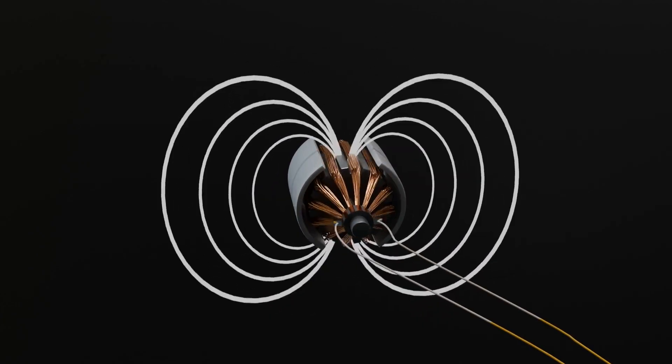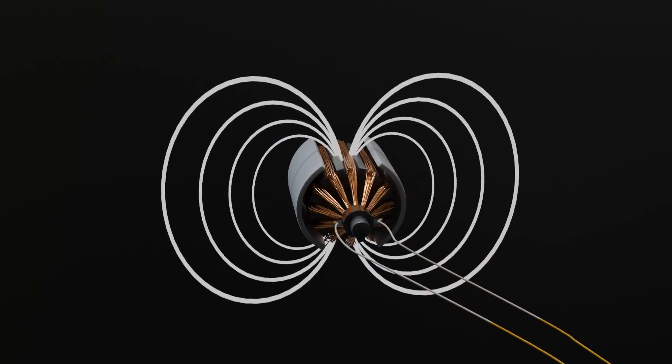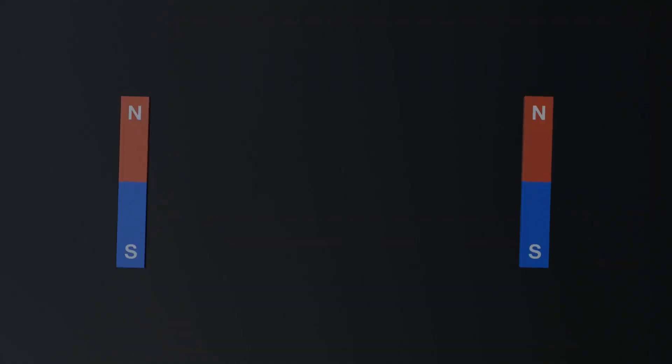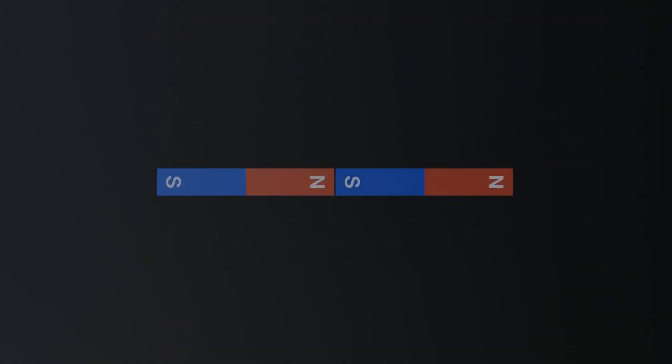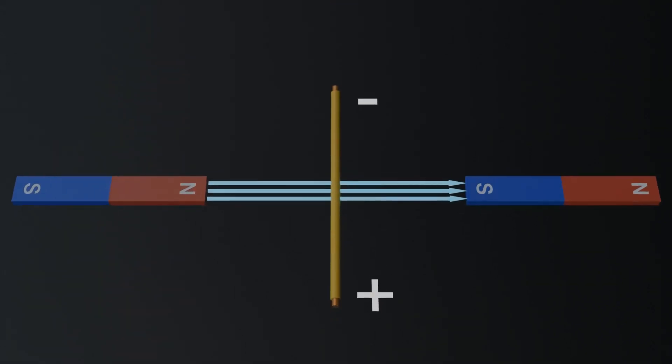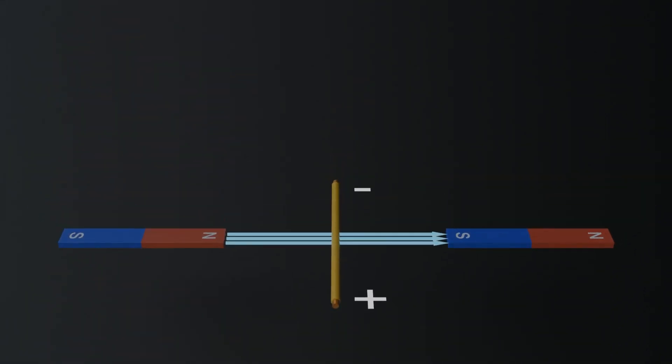In the next steps, we'll see exactly how this transformation happens. We know that magnets have two poles and unlike poles attract each other while like poles repel. Since a current carrying wire acts like a magnet, it also experiences a force when placed in a magnetic field. This force is what makes an electric motor work.